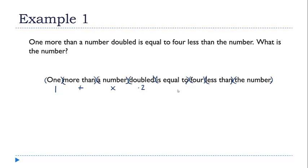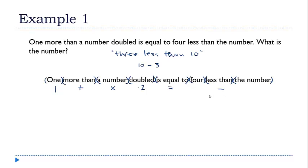Then we have 'is equal to,' which becomes an equal sign. That brings us to the 'less than' part of the statement, and this is where things get a little unusual. In English, we say subtraction words like 'less than' in the opposite order to the way we do the calculation. For example, '3 less than 10' means 10 minus 3, not 3 minus 10. So I'll replace 'less than' with minus, but the 4 and the number parts go in the opposite order.